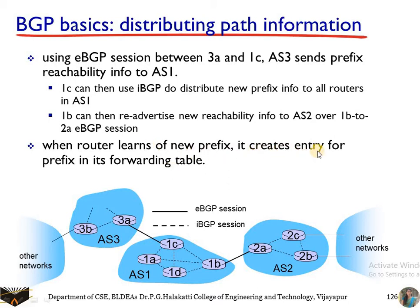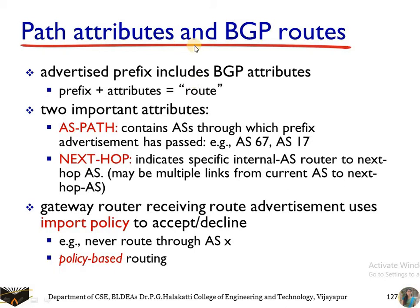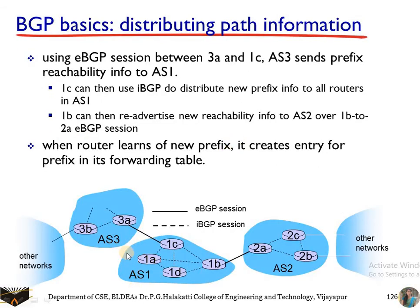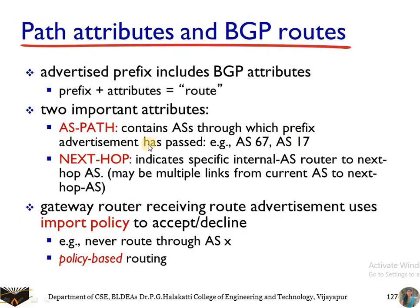When a router learns of new prefixes, it creates an entry for the prefix in its routing table. This is done through path attributes. A route is considered as the prefix plus its attributes. The first attribute is AS path — the autonomous system path, which contains the list of autonomous systems through which the prefix advertisement has passed. For example, if AS1 receives an advertisement from AS3 and forwards it, AS2 receives advertisements from both AS1 and AS3. Similarly, if AS17 received information from AS67, both are passed further together.